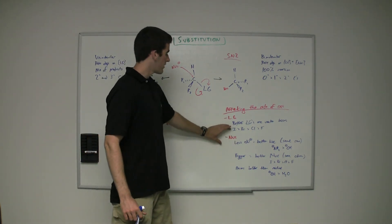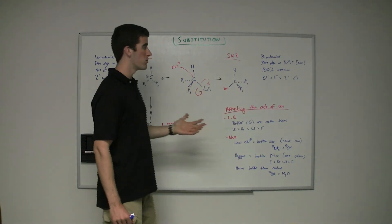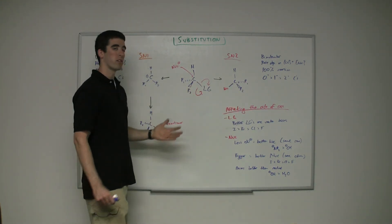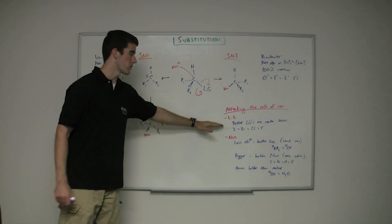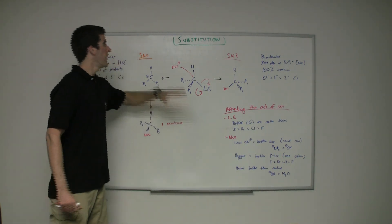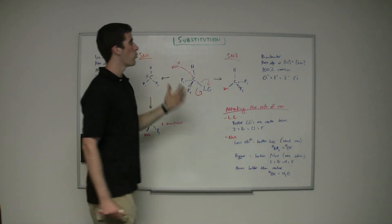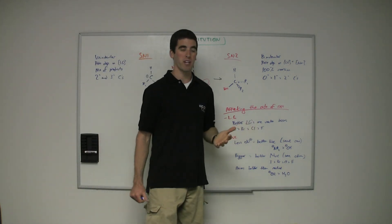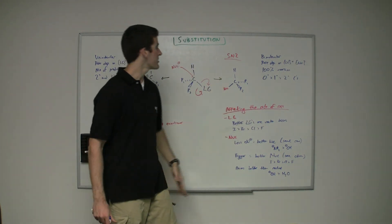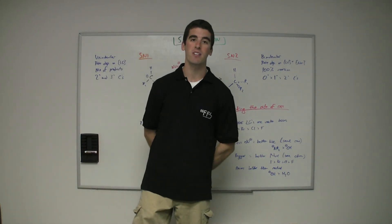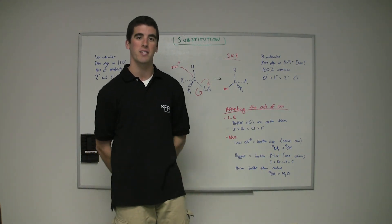Keep in mind: if you're looking at the nucleophile, you're really only looking at SN2, because the SN2 rate depends on both the leaving group and the nucleophile. For SN1, you're only concerned with the leaving group. This covers substitution — both reactions and what affects their rates. Stay tuned for the elimination segment of these reactions, and thank you for tuning in.